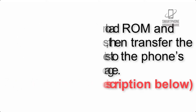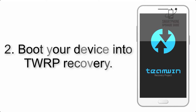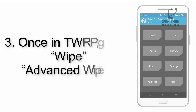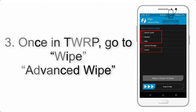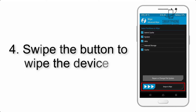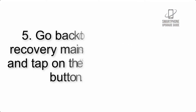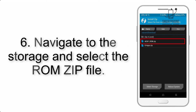Step 2: Boot your device into TWRP recovery. Once in TWRP, click on Advanced Wipe and select the checkboxes as shown in the image, excluding internal storage. Step 4: Swipe the button to wipe the device.